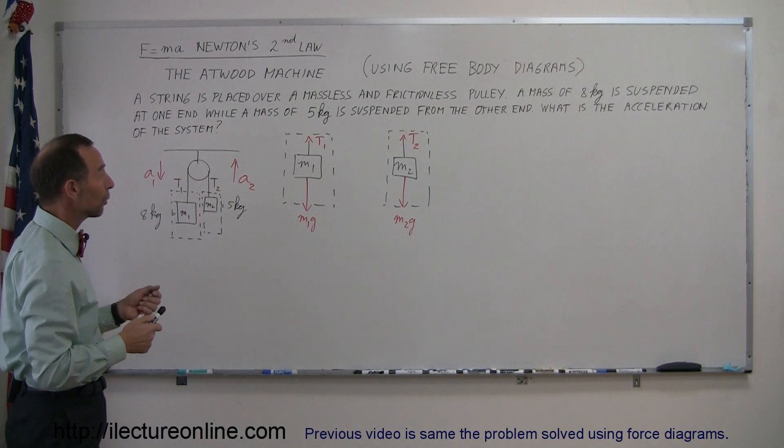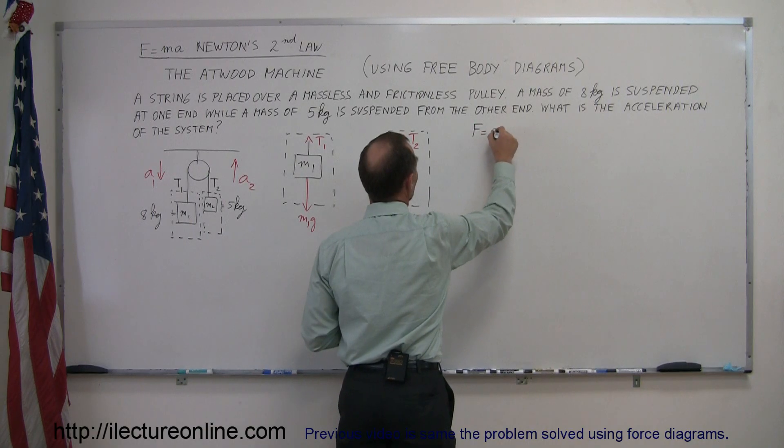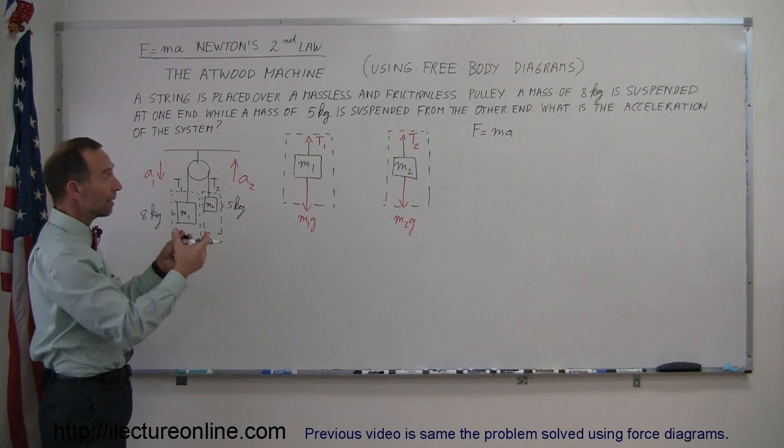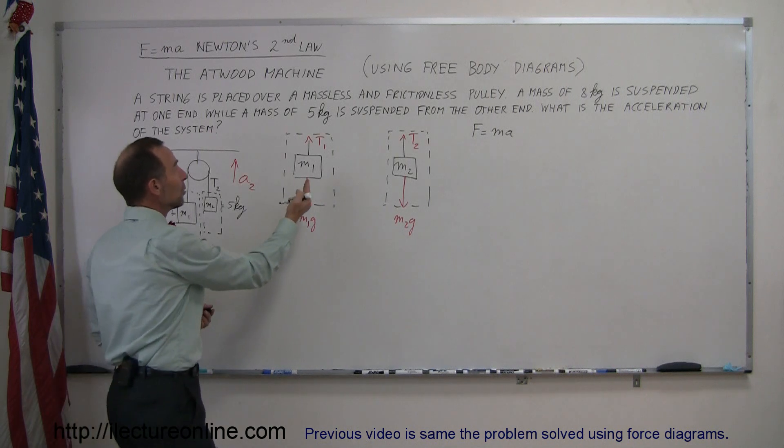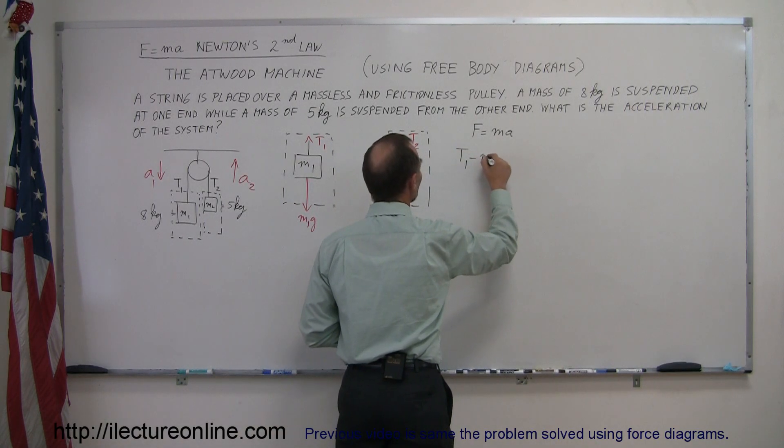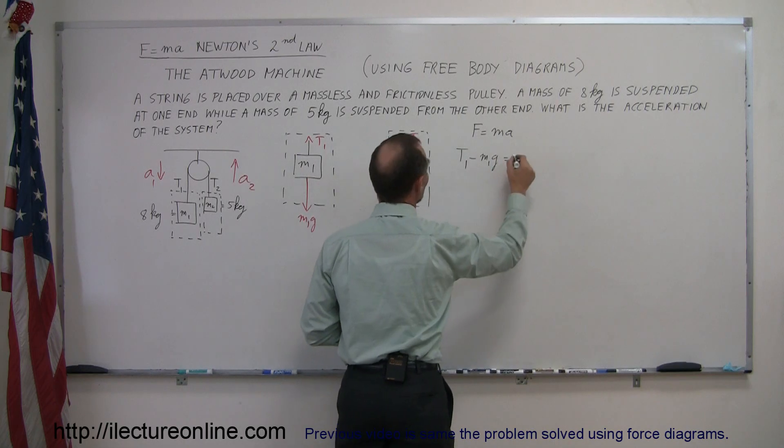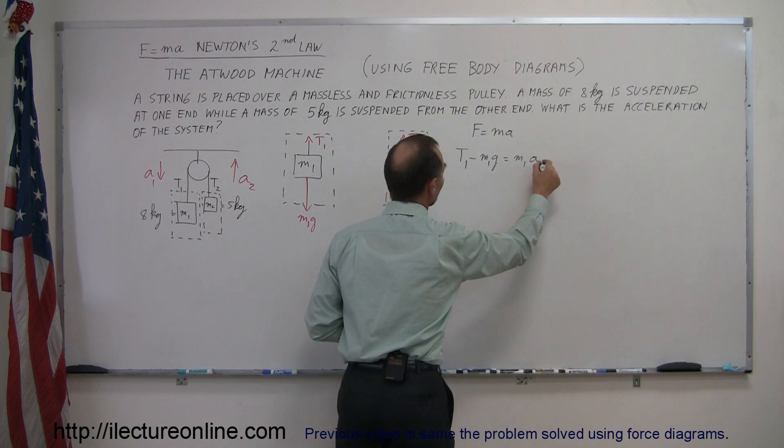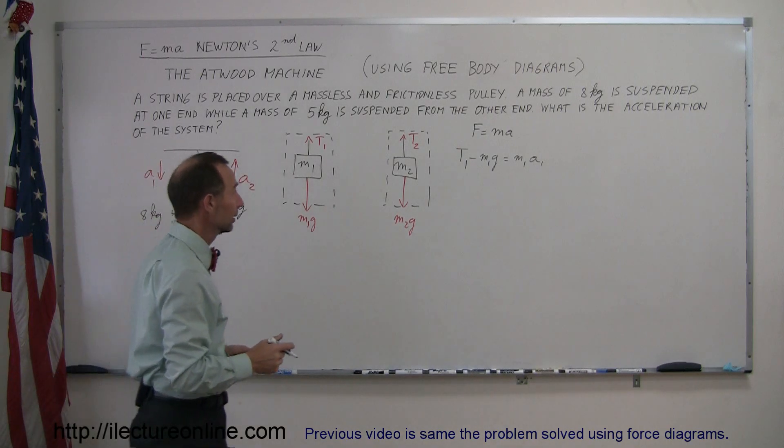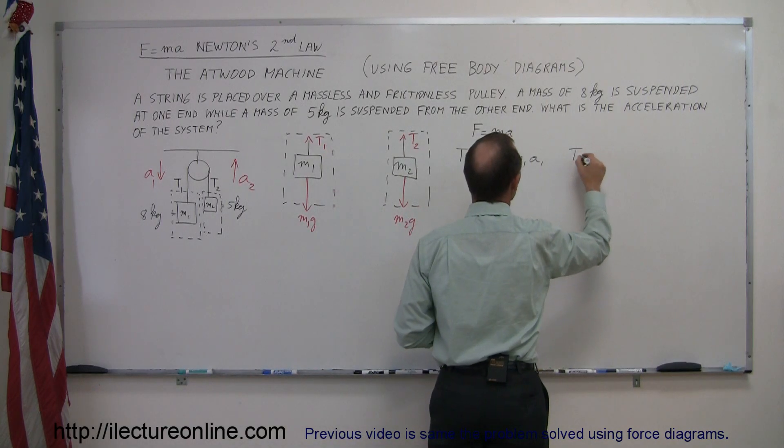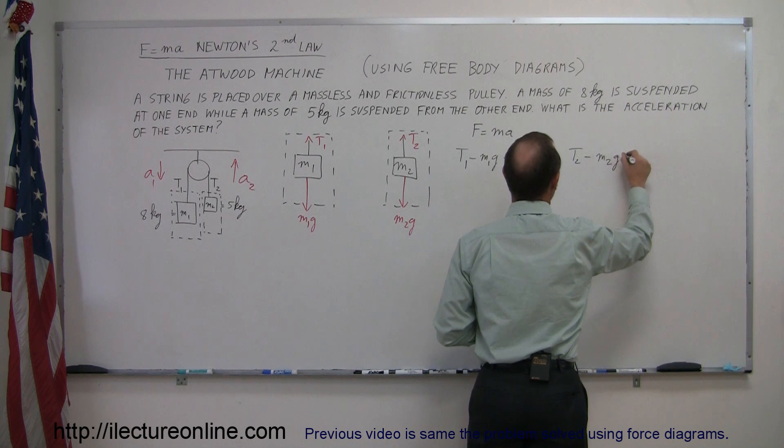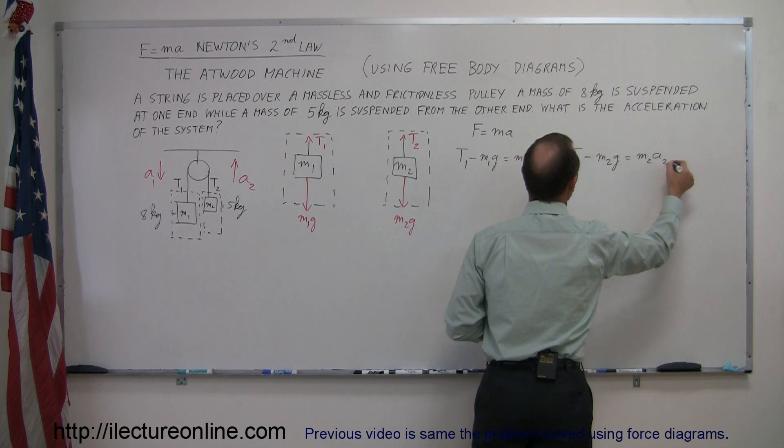Then, using the equation F equals ma, we can now write the equivalent equation for each of these two free-body diagrams. We took each body by themselves and drew all the forces on it. We have T1 acting in a positive direction, minus m1g pulling down, equals the mass of the body, m1, times its acceleration A1. We'll do the same for the second block. We have tension 2 pulling up, minus m2g pulling down, equals m2 times its acceleration A2.